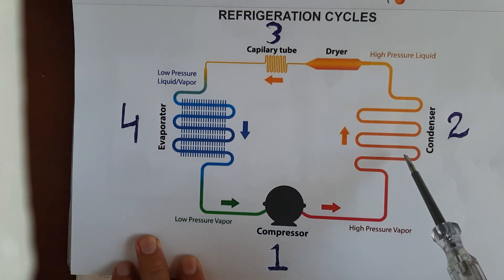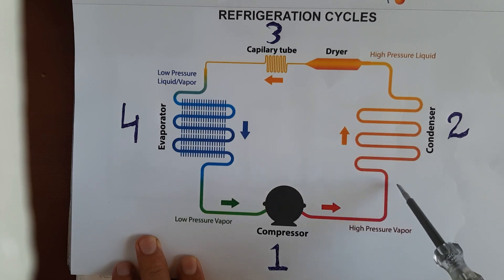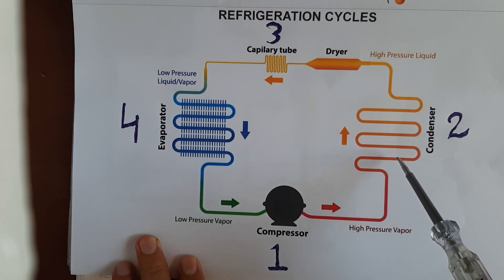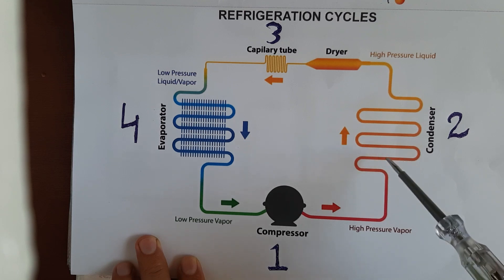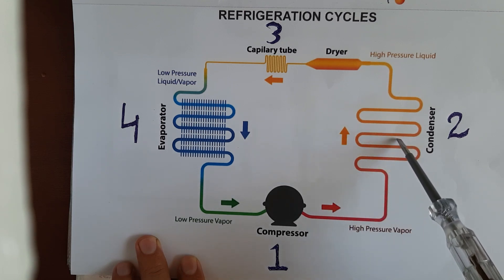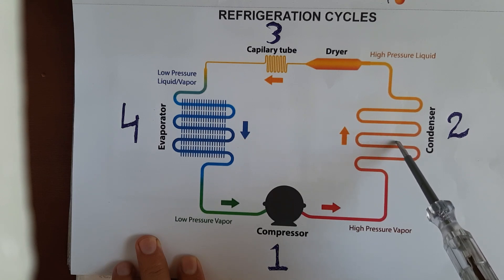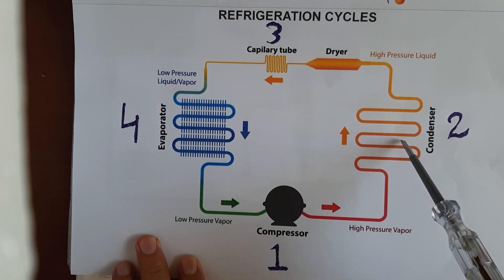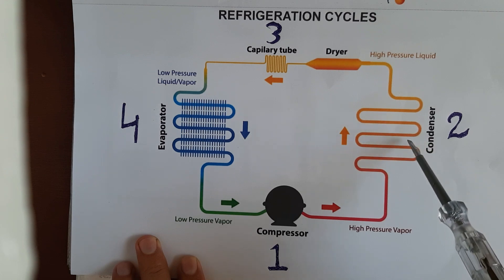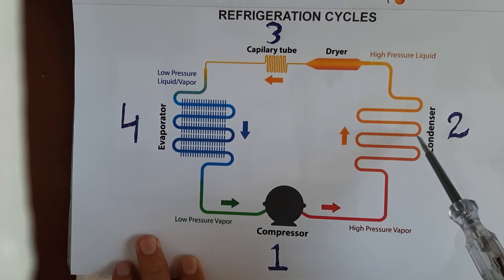Now we will discuss how the condenser works. The condenser works to remove heat from the high-pressure, high-temperature refrigerant, and the same refrigerant changes into liquid form. After the condenser, your refrigerant condition is liquid. That liquid goes to the capillary, and the capillary controls the liquid.